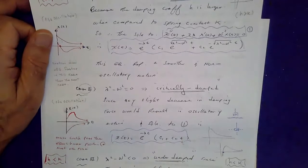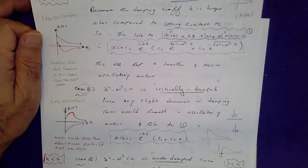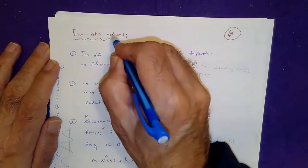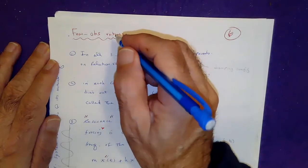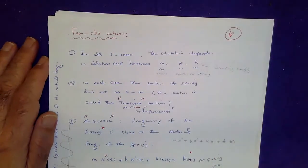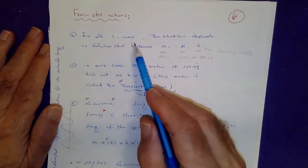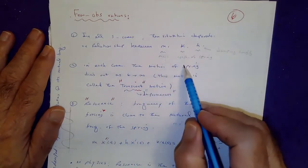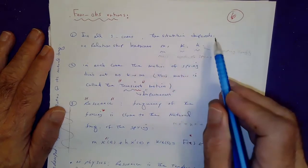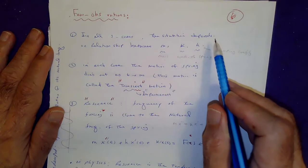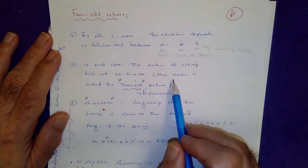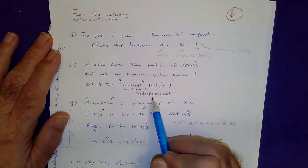Critically damped (case 2) is the ideal case — not too fast, not too slow. A few observations: in all three cases, the situation depends on the relationship between mass, spring constant, and damping coefficient. In each case, whether over-damped, critically damped, or under-damped, the motion of the spring dies out as t approaches infinity. This motion is called transient motion or impermanent motion.